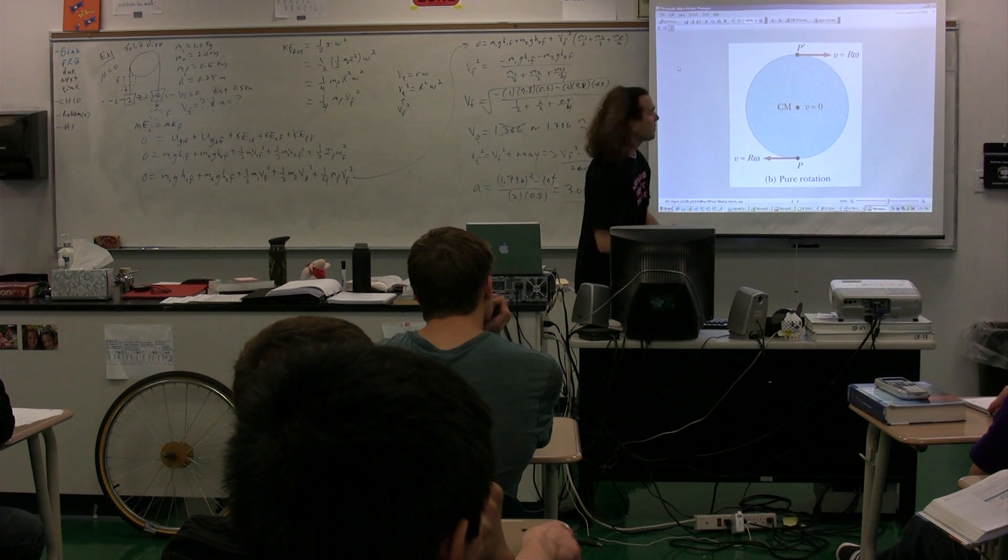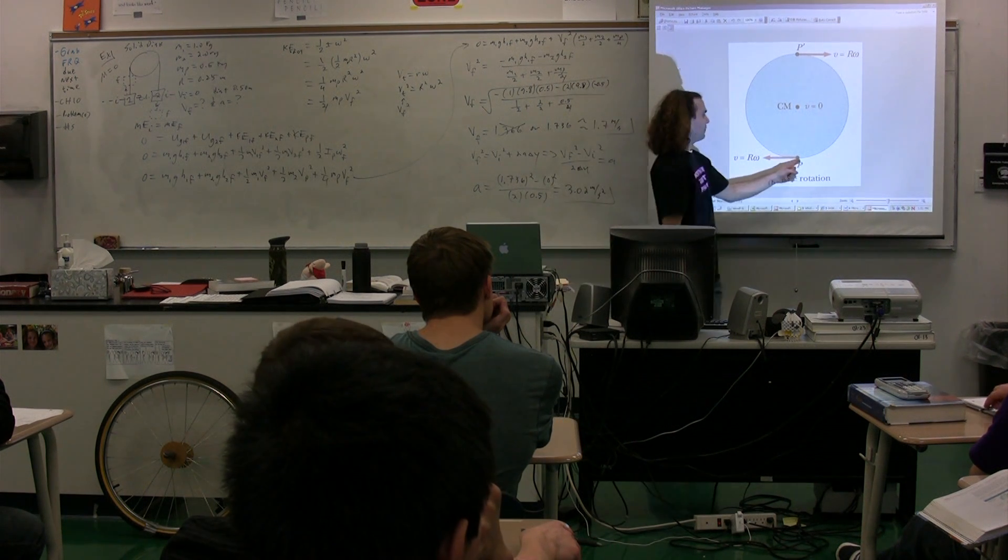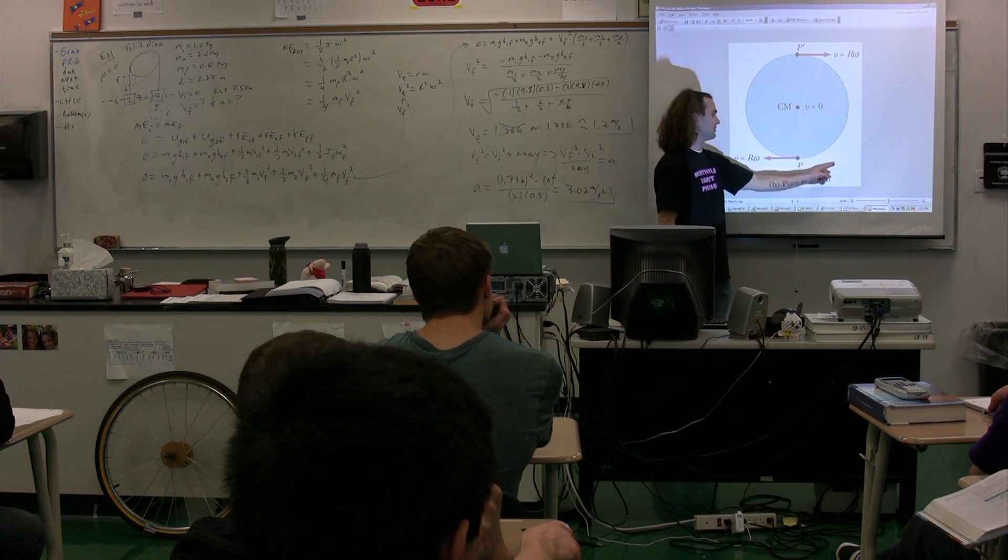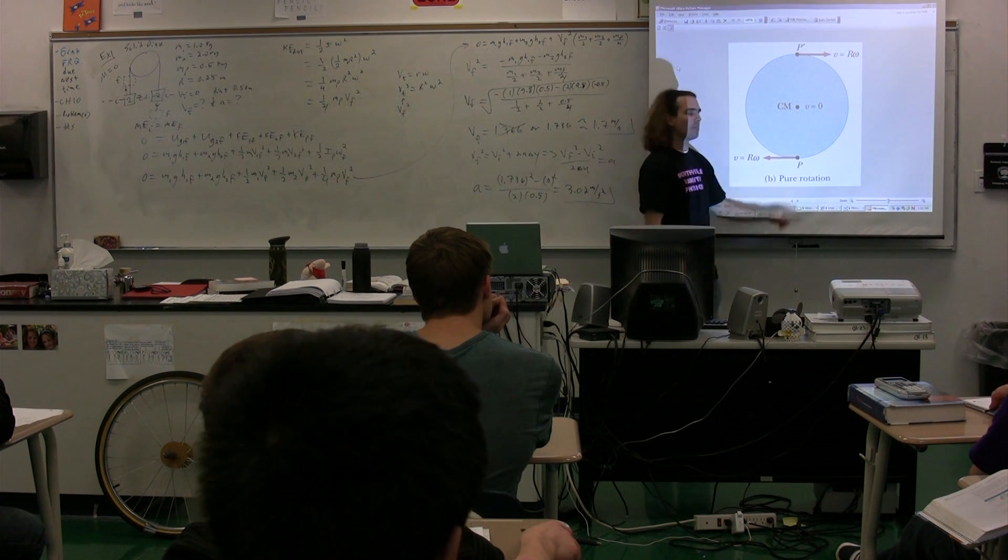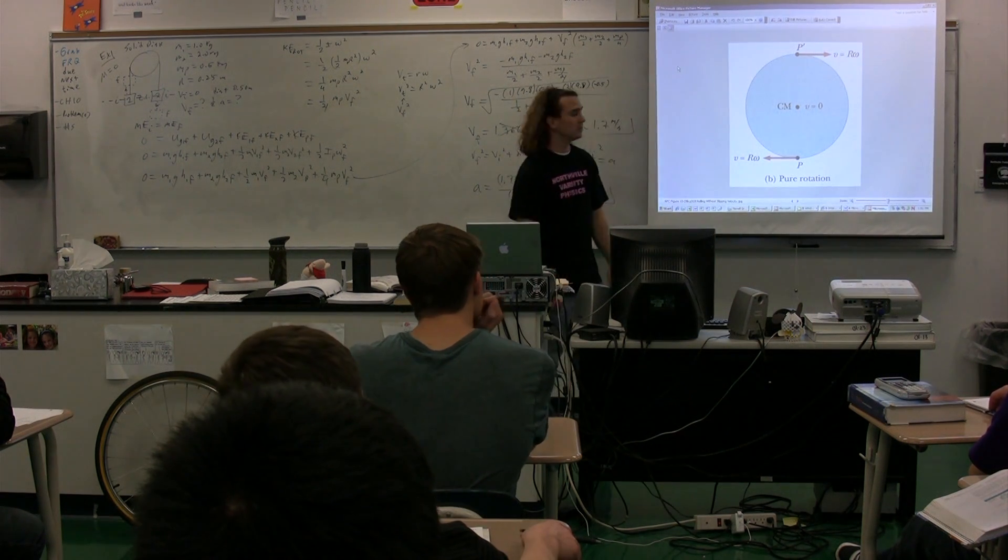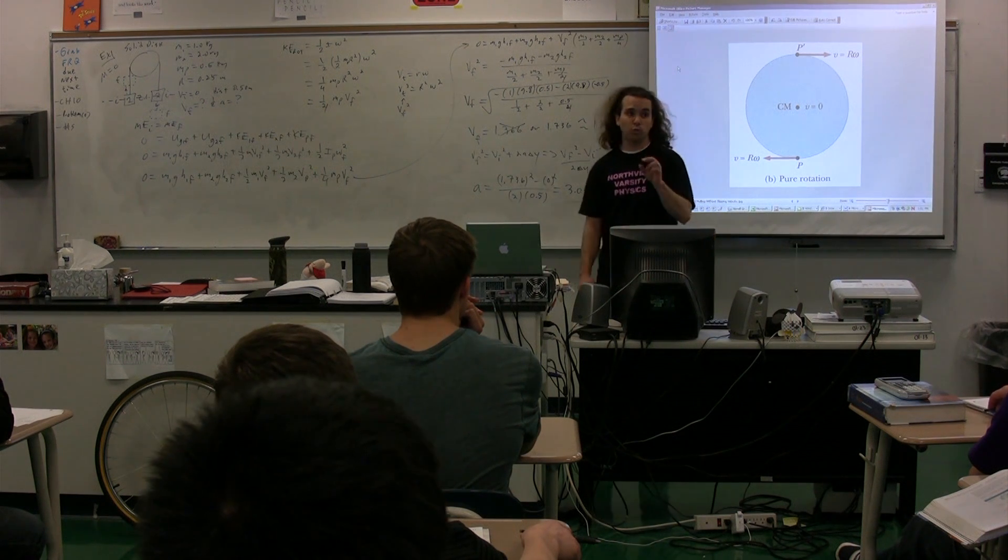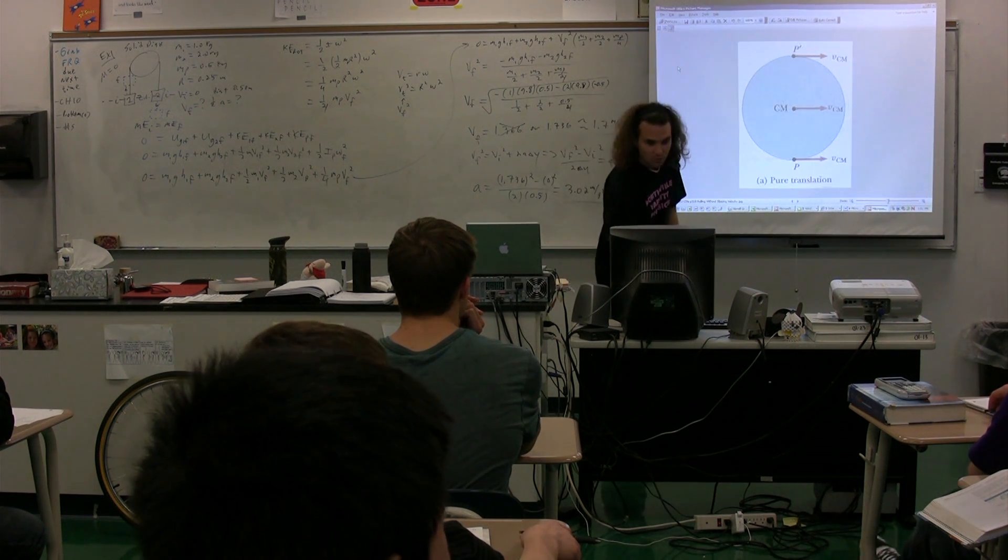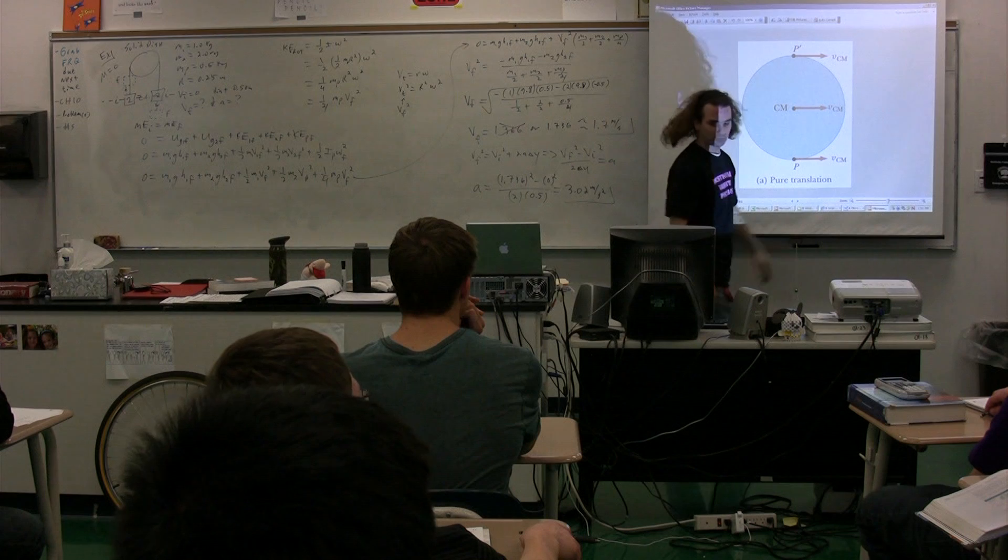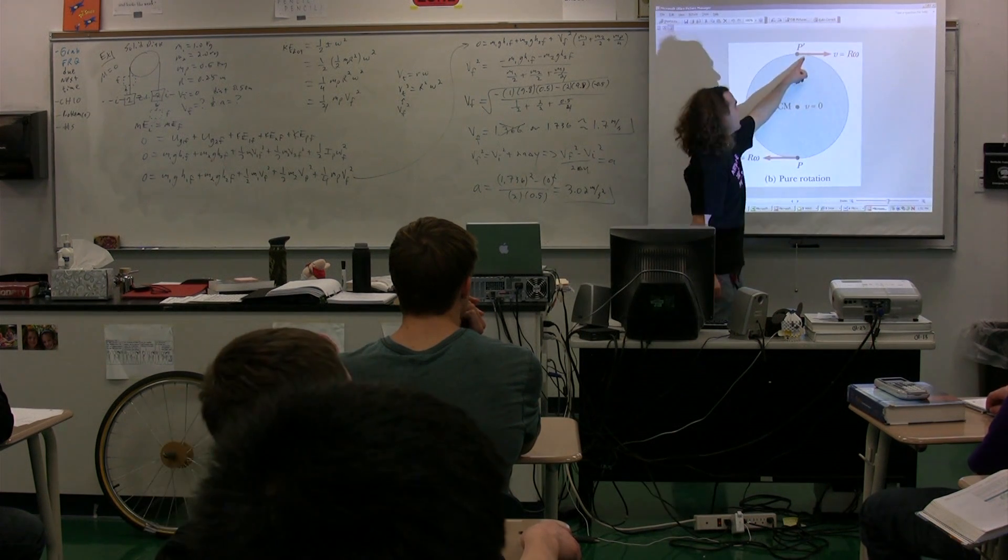Now, what we're going to do is combine those. So if we combine the velocity to the right and to the left on the bottom, what do we get? Zero. If we combine them on the top, we get twice as much. If you look, we have this one plus this one is twice as much.